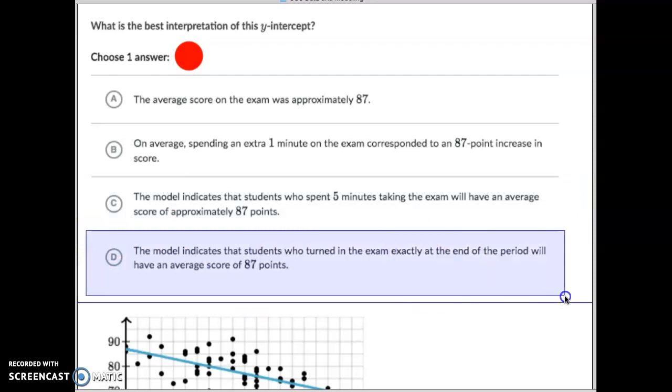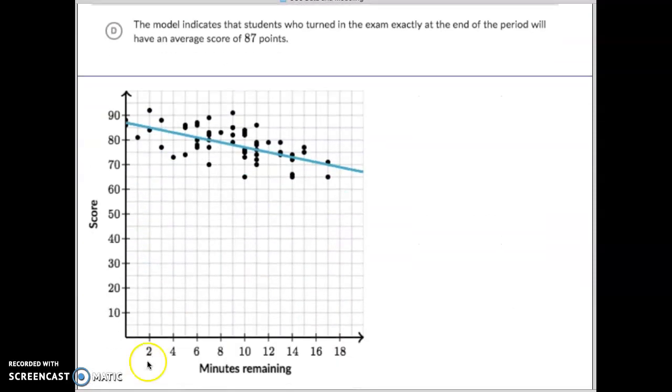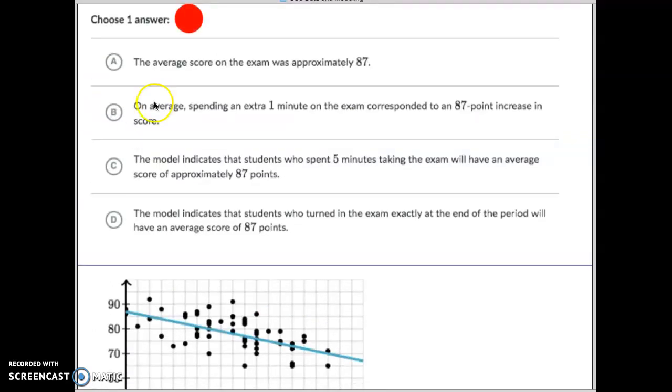The model indicates that a student who turned in the exam exactly at the end of the period, so no time remaining, would have an average score of 87. That is correct. So if someone had zero minutes remaining on their test score, their average score was going to be an 87. So that one is right there. So it's just interpreting what this is saying.